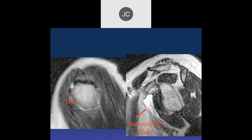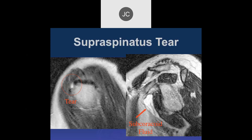My guess is that joint fluid goes through the tear in the supraspinatus into the subacromial/subdeltoid bursa, which communicates with the subcoracoid. In the upright position, fluid will drain into the subcoracoid, so sometimes you won't see an effusion in the subacromial/subdeltoid bursa. The acromion on this image — we're too medial to be including the distal clavicle and acromion here.